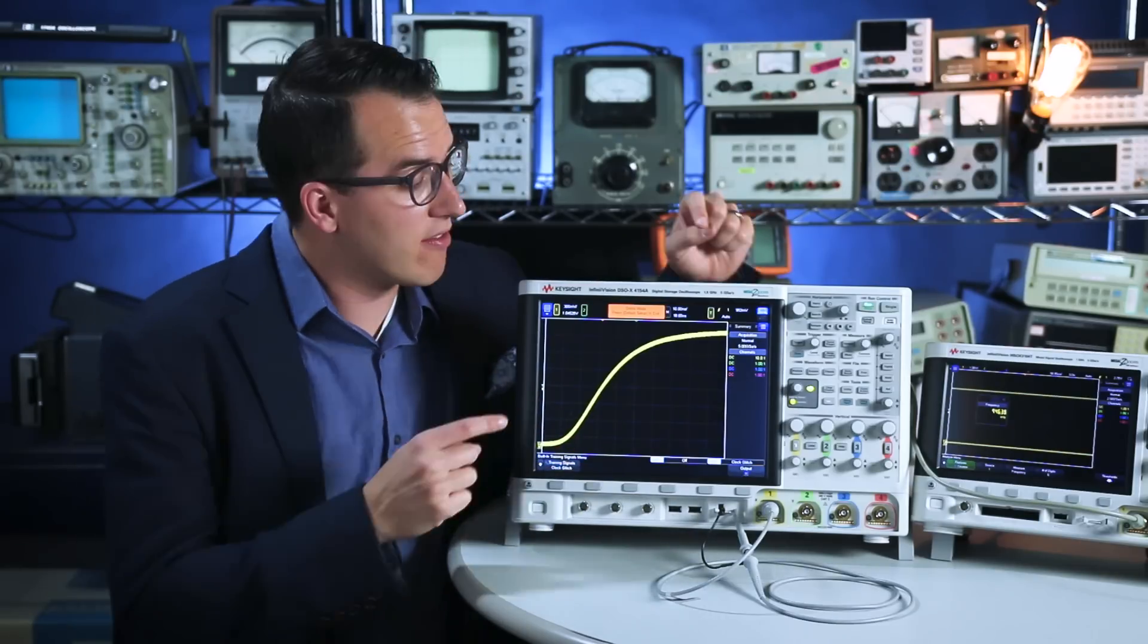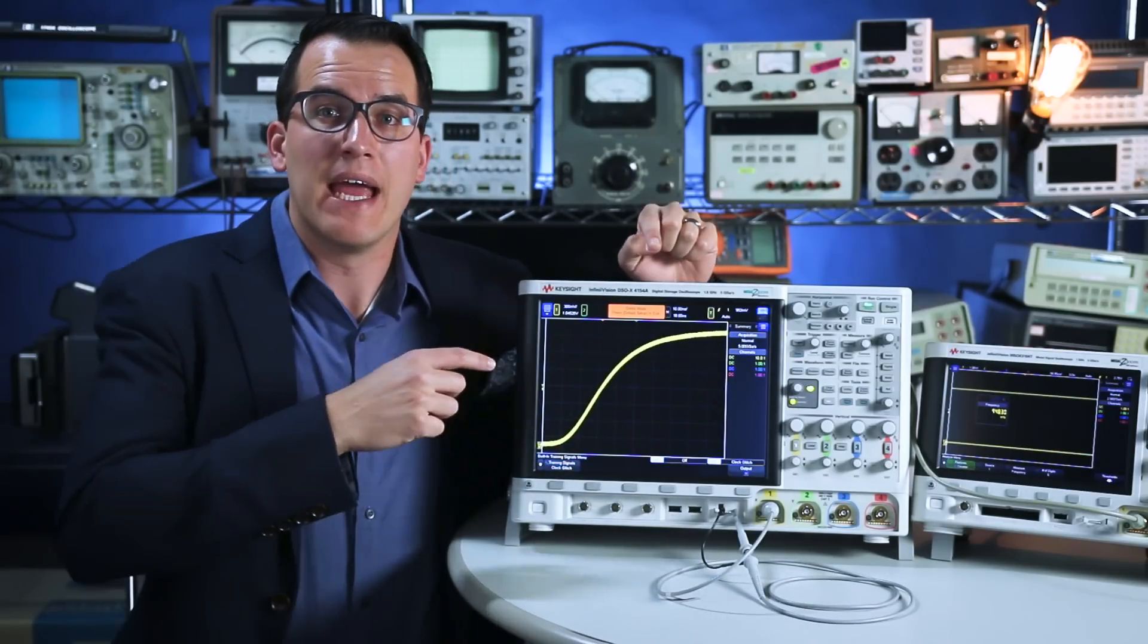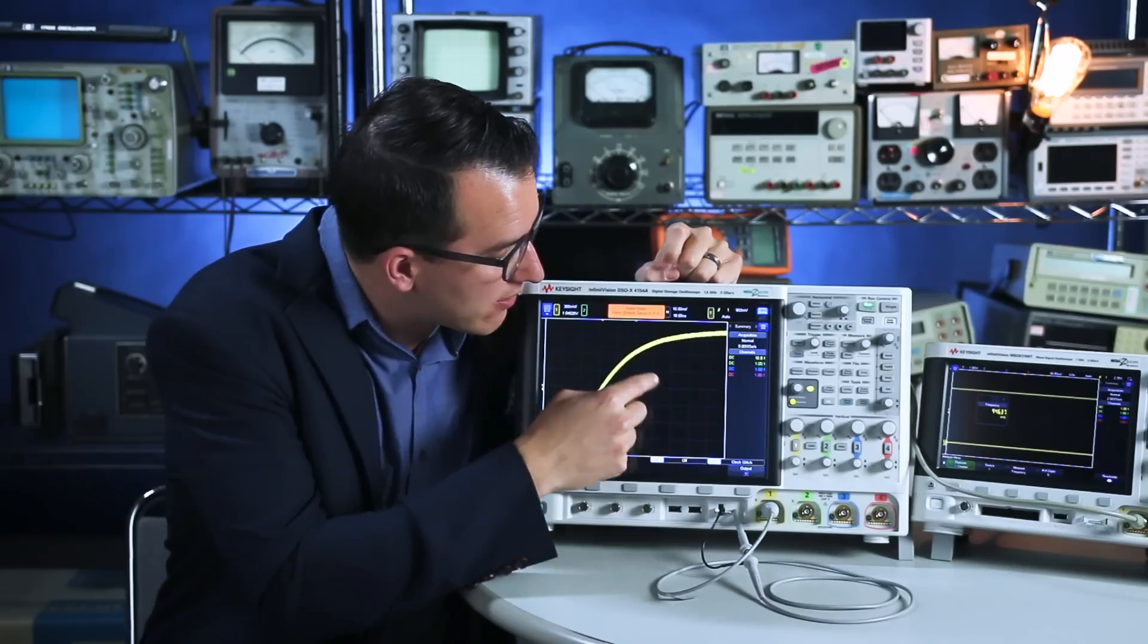So let's look at an example. This is a 1MHz waveform and I know that once per second there's going to be a glitch.